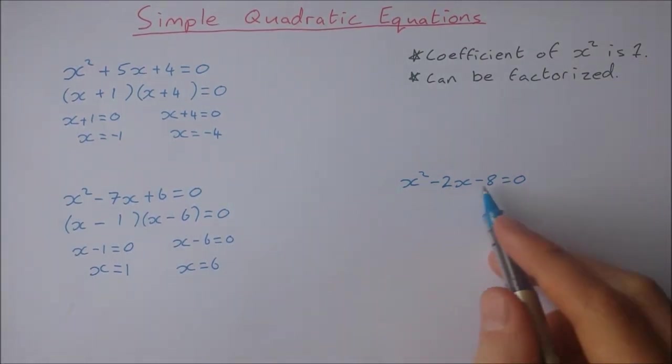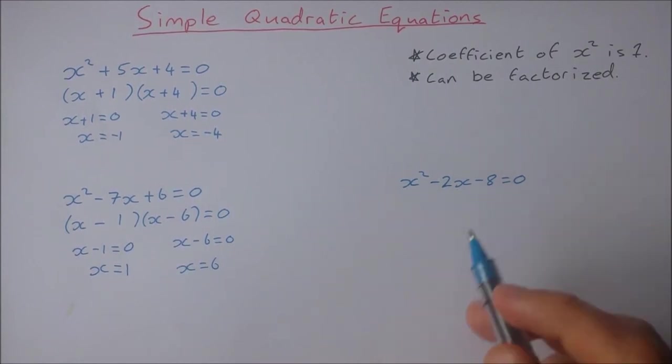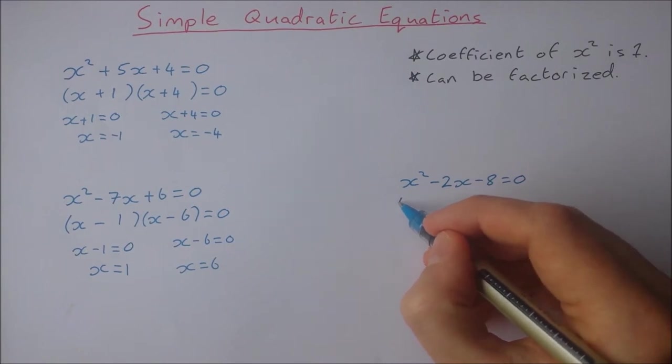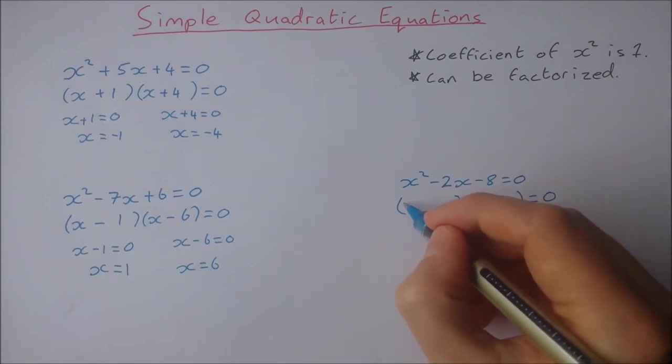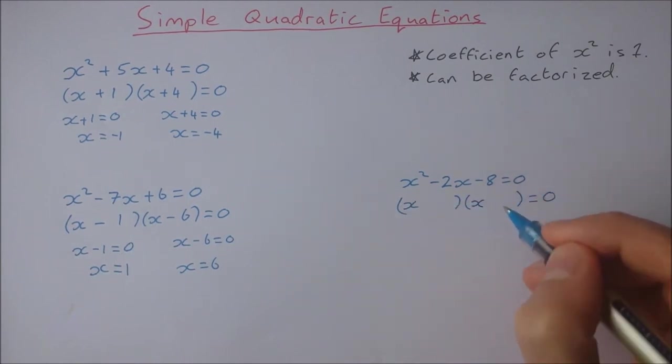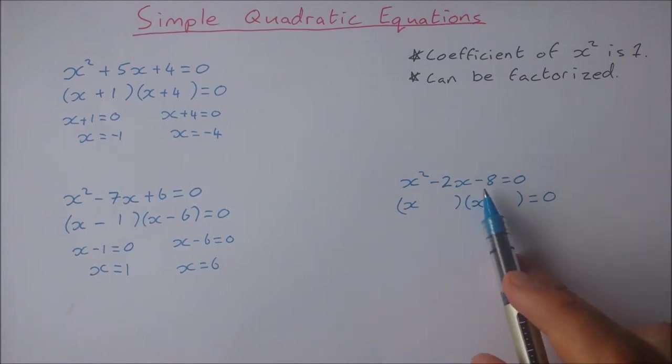Now in my last example, I have x squared minus two x minus eight equal to zero. I'm going to start off the same way. Open up two sets of brackets. Start off by factorizing the x squared as x and x. And now I'm looking for factors of minus eight that are going to add or subtract to give me minus two.